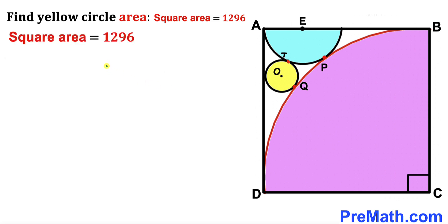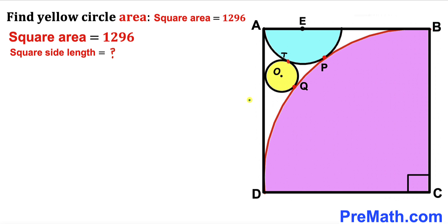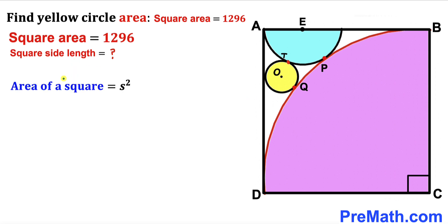Here's our very first step. We know the area of square ABCD is 1296, and our task is to calculate the side length. Recalling the area of a square formula: Area = S², where S represents the side length. So therefore S² = 1296.